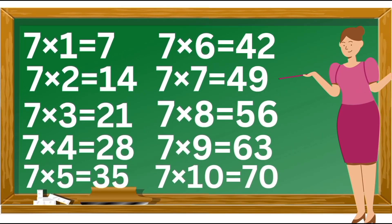7×1 is 7, 7×2 is 14, 7×3 is 21, 7×4 is 28. 7×5 is 35, 7×6 is 42, 7×7 is 49, 7×8 is 56, 7×9 is 63. 7×10 is 70.